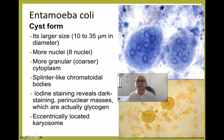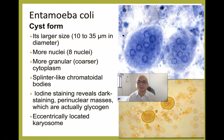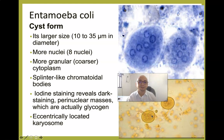Entamoeba coli cysts are larger than E. histolytica cysts, measuring 10 to 35 microns in diameter. While the mature cyst of E. histolytica is quadrinucleated (four nuclei), E. coli cysts can have a maximum of eight nuclei. The cytoplasm is coarser and more granular, and the chromatoidal bar is splintered like a broomstick. Iodine staining reveals nuclei with perinuclear masses, which are glycogen — the stored carbohydrates of E. coli — and eccentrically located chromosomes.